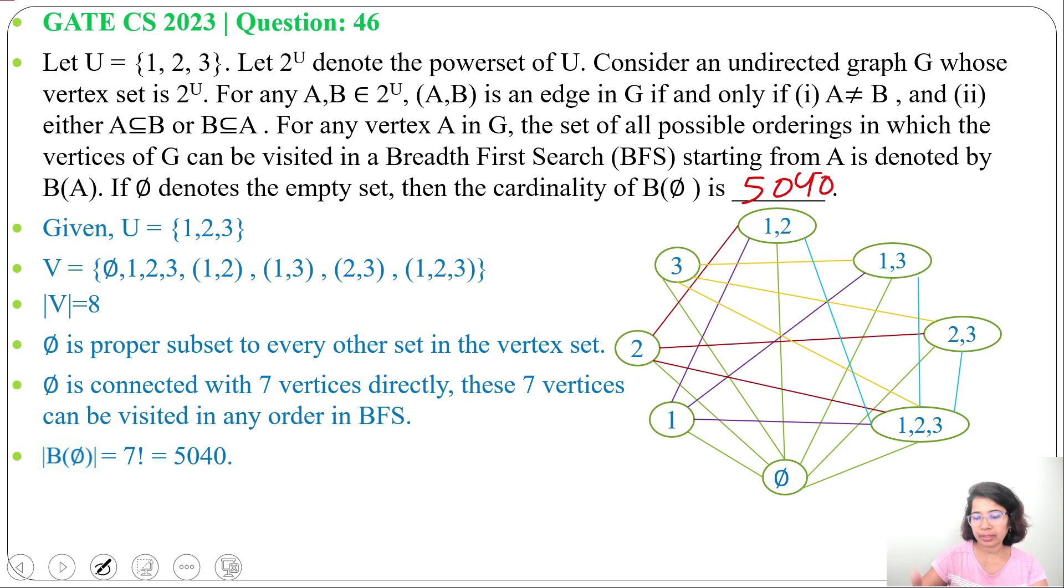You don't need to create the graph. Just knowing φ is connected with 7 vertices, you can simply find 7 factorial. Answer is 5040.